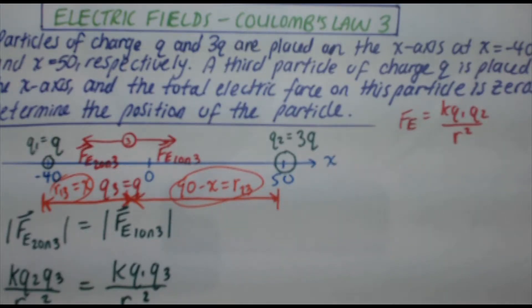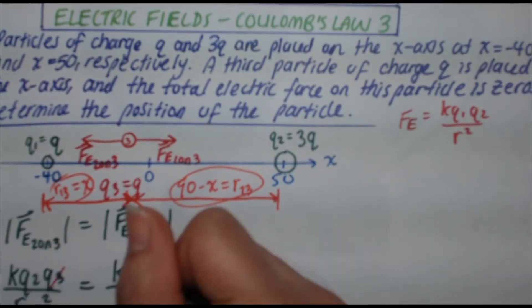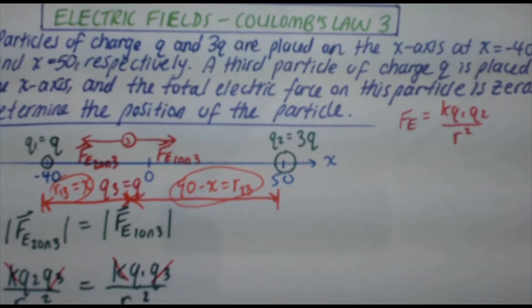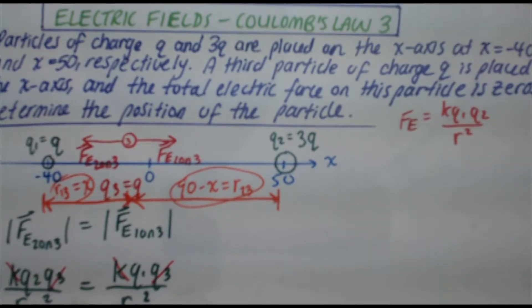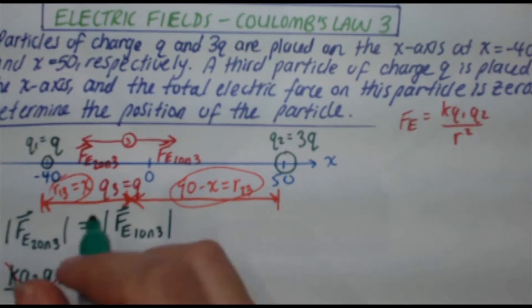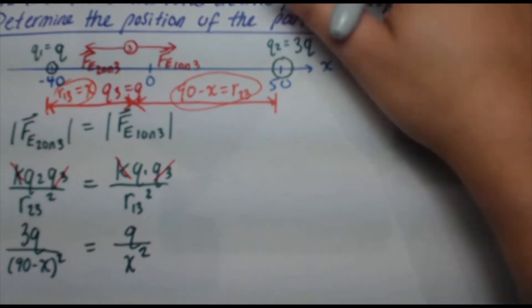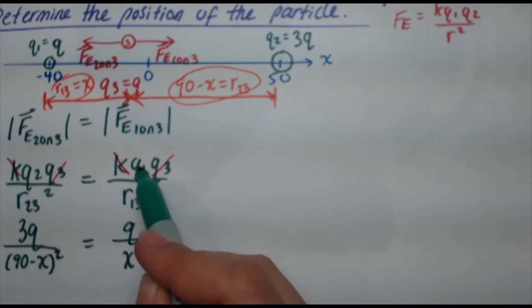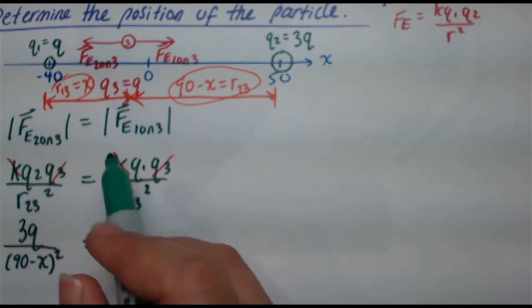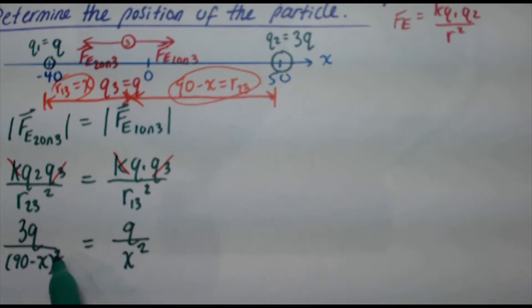So first things first, I'm going to cancel out the q3s and the ks, and I'm going to be left with q2 over r23 squared equals q1 over r13 squared. Now q2 is just 3q, and r23 is 90 minus x. Now make sure that gets squared, 90 minus x, close brackets squared, equals q1, which is just q over r13 squared. So q over x squared. Oh guys, I'm sorry, I didn't scroll that up. So q2 is 3q, q1 is q, r13 is x, so it becomes x squared, r23 is 90 minus x squared.